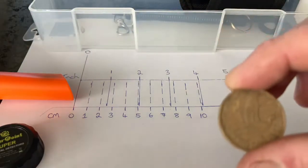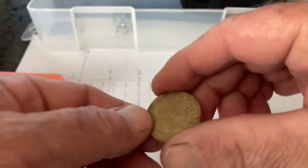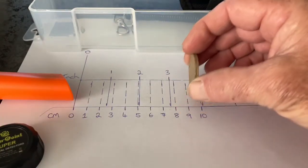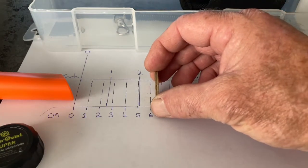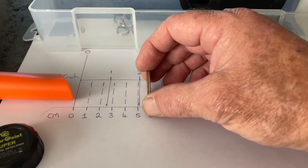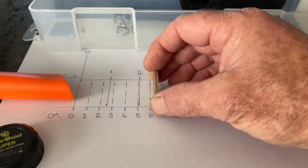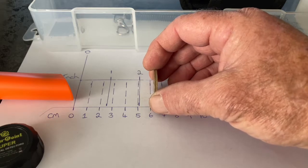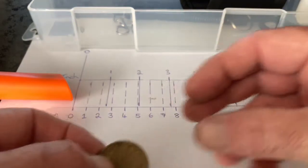We now have a New Zealand two dollar. Okay, a little over six centimeters.